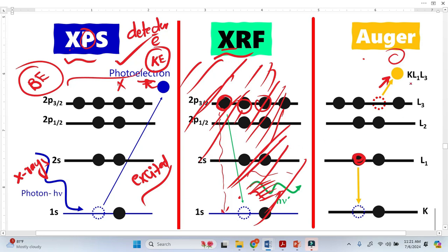This Auger electron is represented by KL1L3, because initially the K vacancy was filled by L1, and another electron emitted from the L3. This is why this Auger electron is represented by KLL. The Auger electron also comes from this place and fills this vacancy, and here we have a vacancy. This is the final, the final atom.